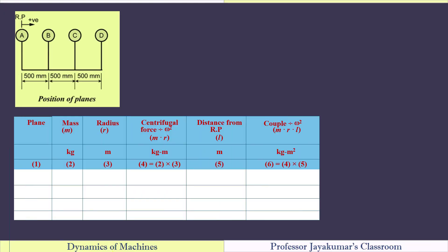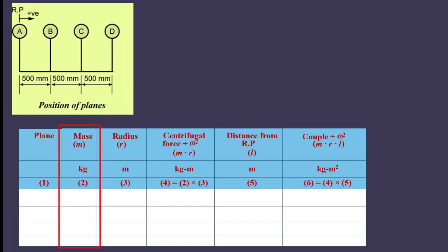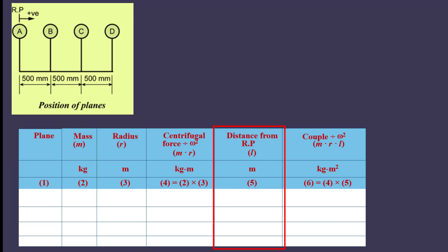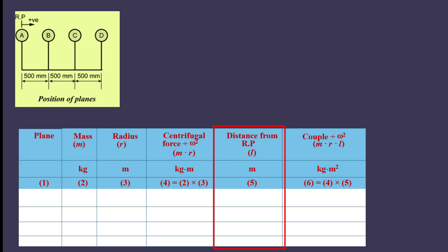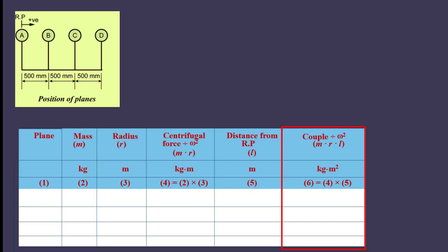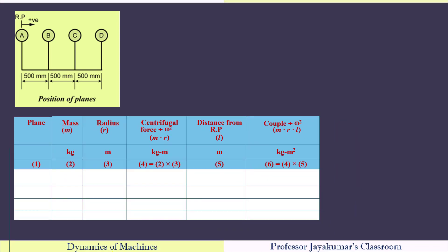Step number three: let us tabulate the centrifugal force and centrifugal couple values. The table has columns for plane, mass, radius, M×R (centrifugal force), distance from reference plane (L), and couple value M×R×L. We have four masses A, B, C and D. Mass A is the reference plane. We do not know Ma, so let me call it Ma. The radius is 100 mm or 0.1 m. Multiplying M×R gives 0.1×Ma. Since plane A is itself the reference plane, L equals zero, so the couple value is also zero.